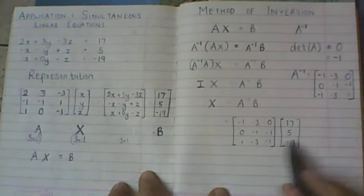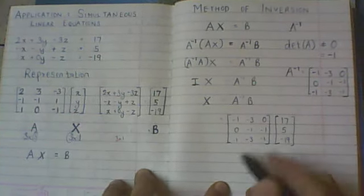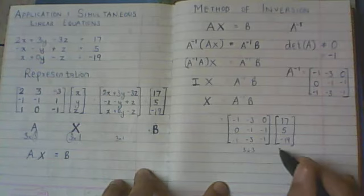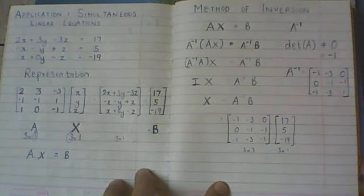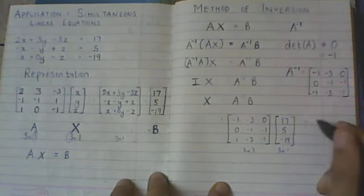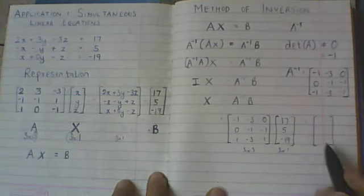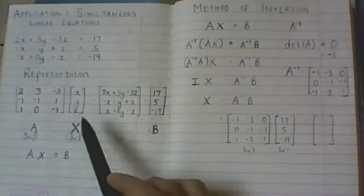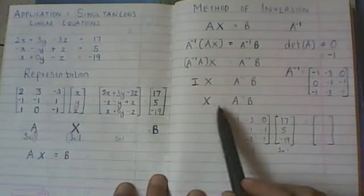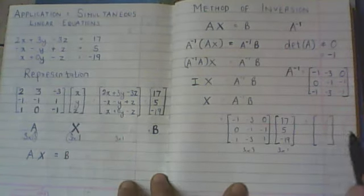So this is just matrix multiplication again. This is a 3 by 3 matrix, this is a 3 by 1 matrix, the multiplication is valid. The final result will be again a 3 by 1 matrix, which is consistent with what I have on the left hand side. This was also a 3 by 1 matrix. So I was expecting to get a 3 by 1 matrix here, which is good.